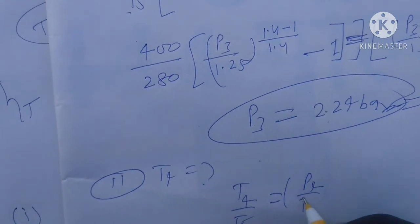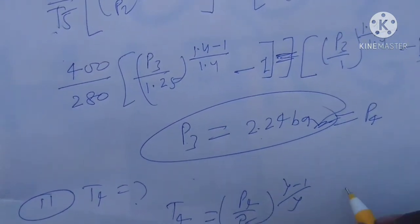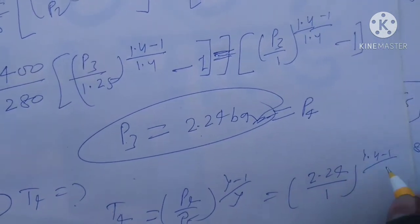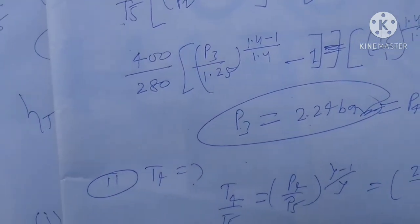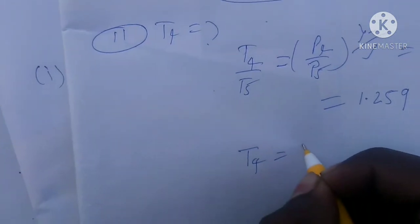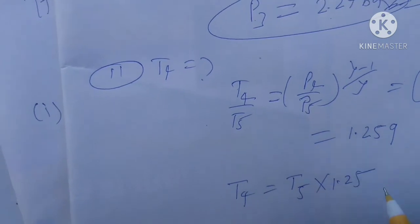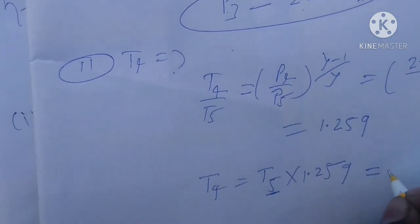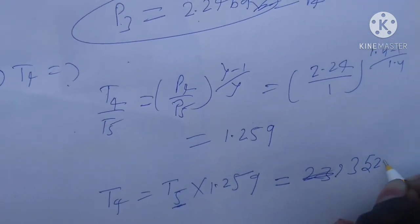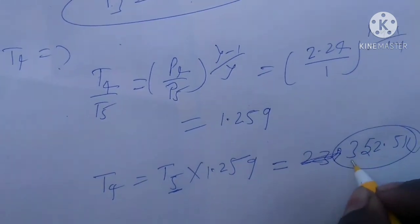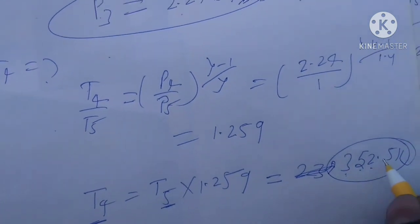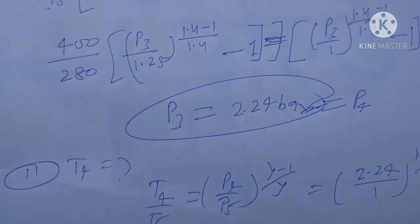Putting in all the values — P4 = 2.24 bar, P5 = 1 bar, T5 = 280 K — and applying the isentropic relation with gamma = 1.4, after calculation we find T4 = 352.5 Kelvin. This is the answer to the second question, the cooler exit temperature.